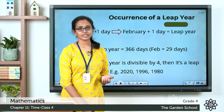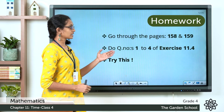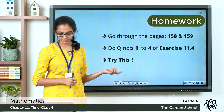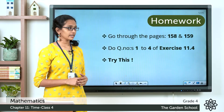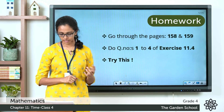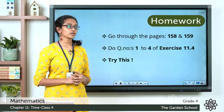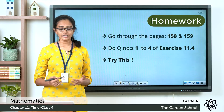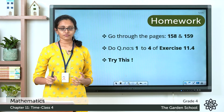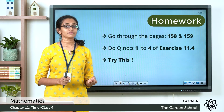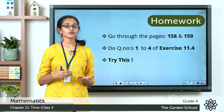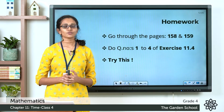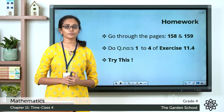Children, I hope the concepts we learned today are clear to you. Go to pages 158 and 159 to read about these topics. Then move on to exercise 11.4 on page 159 and complete questions 1, 2, 3, and 4 in your notebook. On the same page there is a section called 'Try This' where you circle the leap years from a given list by checking their divisibility by 4. Once you're done, take a picture and send it to us on Teams. That's all for today — we'll see you in the next class with a new topic. Bye!